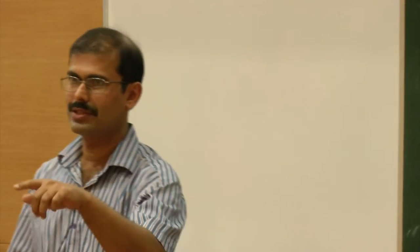This will be a quiz where I will show some questions with options A, B, C, D. You have to write down your answers and then hand it over to your TA. On a sheet of paper, write your roll number and then question 1A, question 2B, question 3C, whatever, and hand it over to your TA.